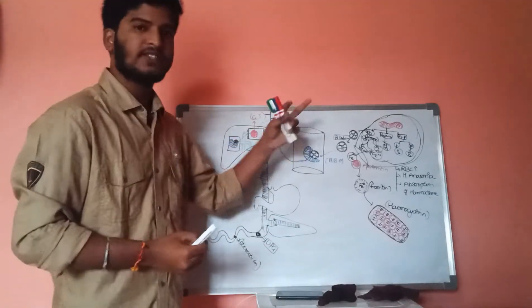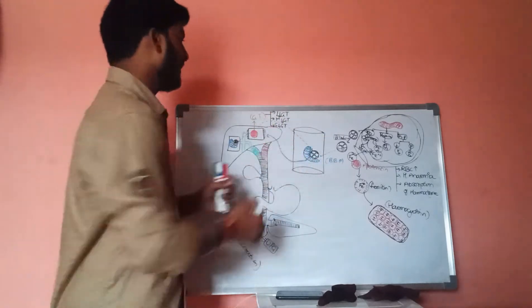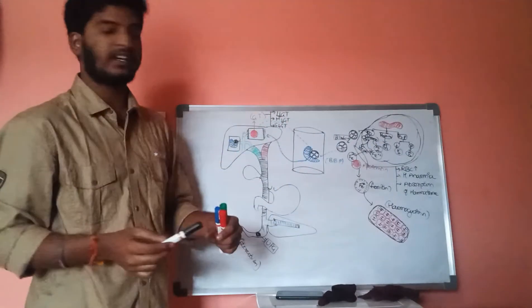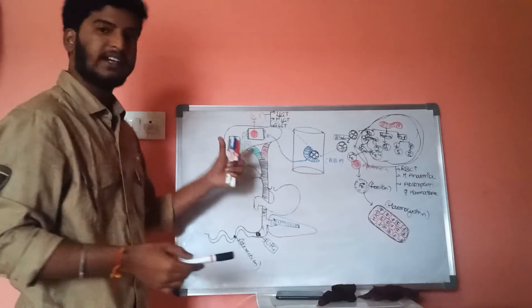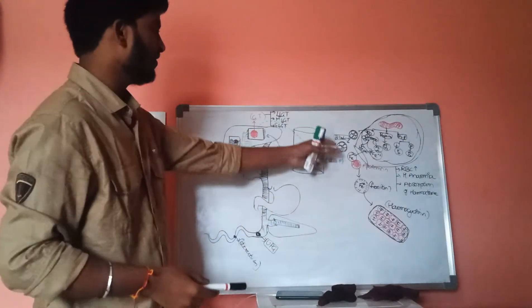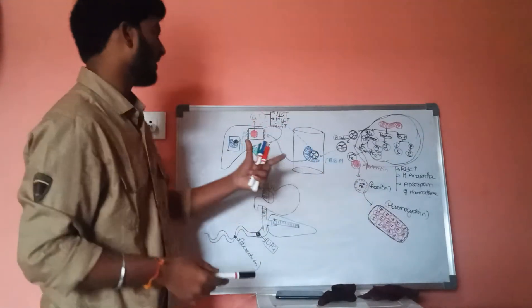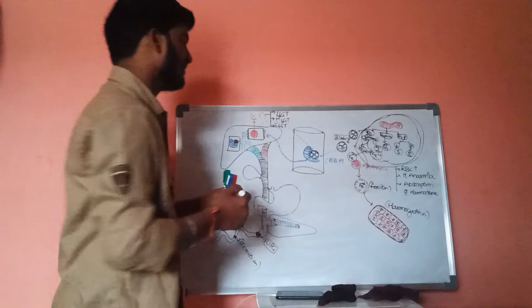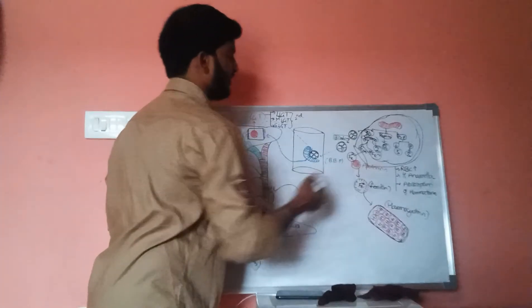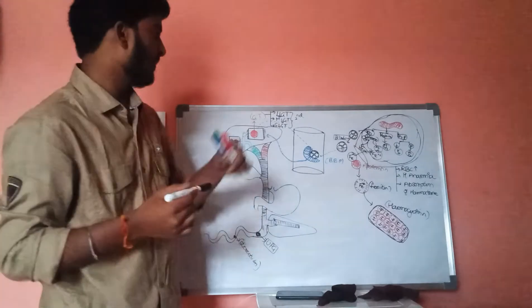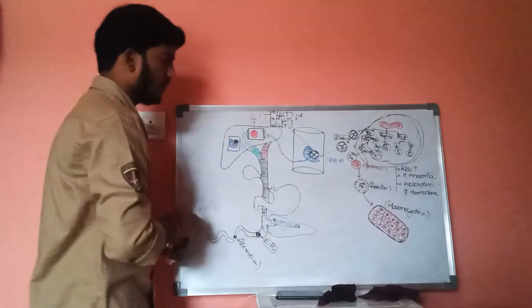Whenever glucuronyl transferase is decreased, it results in hyperbilirubinemia. If there is a moderate decrease of glucuronyl transferase, the unconjugated bilirubin cannot be converted into conjugated bilirubin, which results in hyperbilirubinemia. Severe decrease of glucuronyl transferase also results in hyperbilirubinemia. This is some information about hyperbilirubinemia.